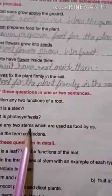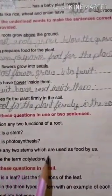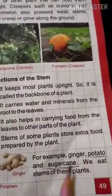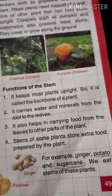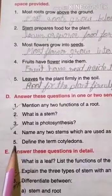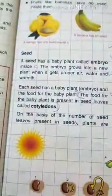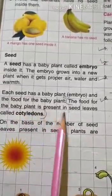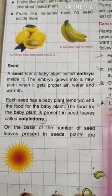Number four: name any two stems which are used as food by us. The answer is potato and sugar cane. Number five: define the term cotyledons. The answer from page 51: the food for the baby plant present in the seed leaf is called cotyledons.